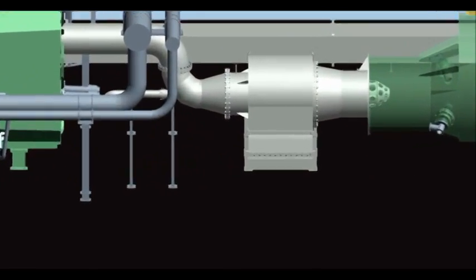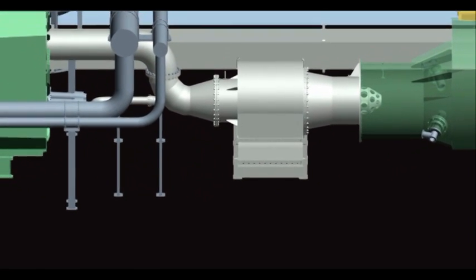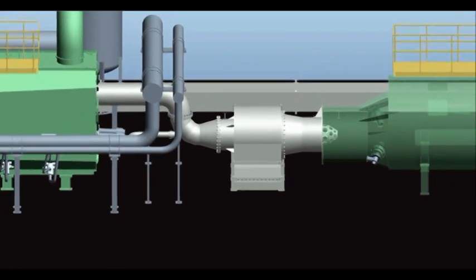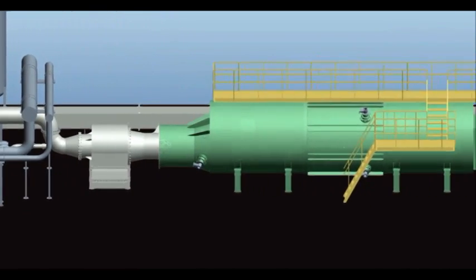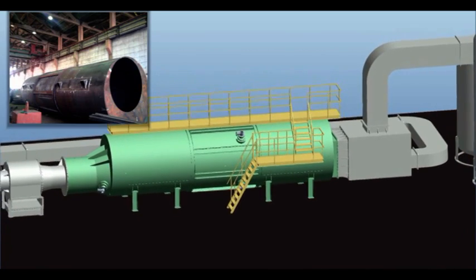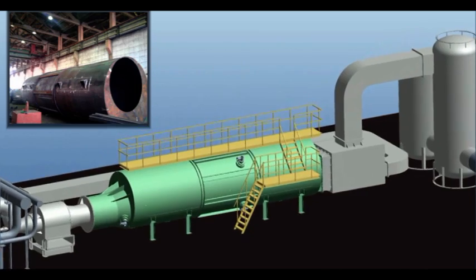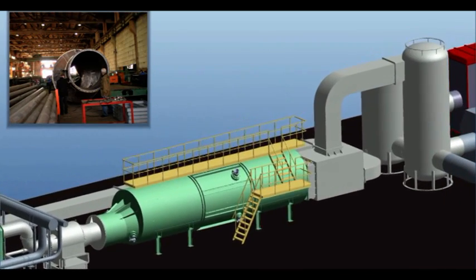Syngas is mixed with air in the main burner and directed to the oxidizer for further degradation. Thermal oxidizer operates under 1200 degrees centigrade and transforms syngas into carbon dioxide, nitrogen oxides and water vapour.